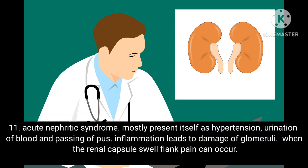Eleventh, acute nephritic syndrome — mostly presents with hypertension, urination of blood, and passing of pus. Inflammation leads to damage of the glomeruli, and when the renal capsule swells, flank pain can occur.